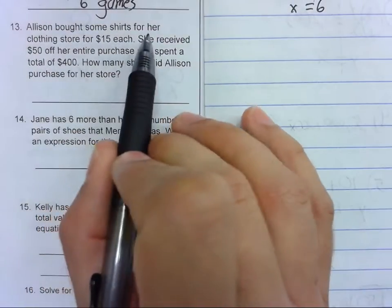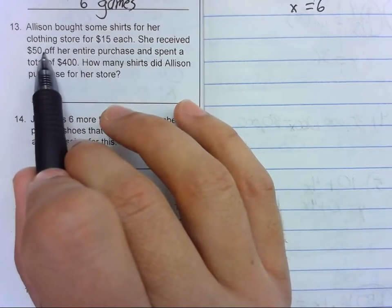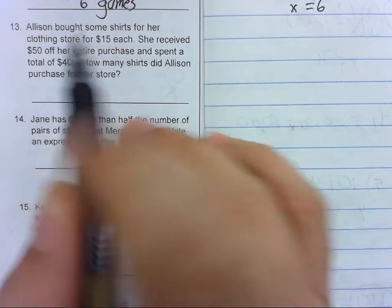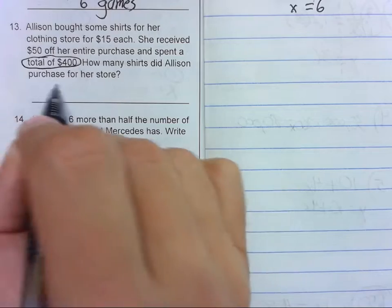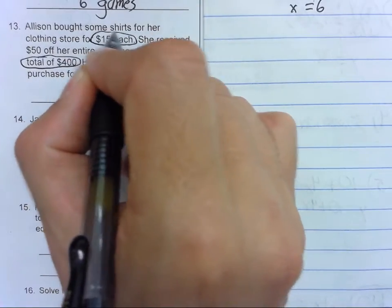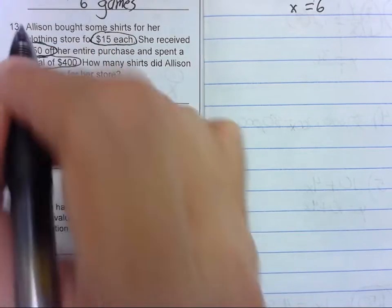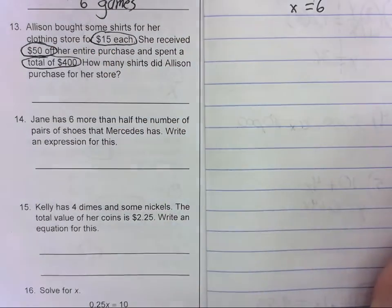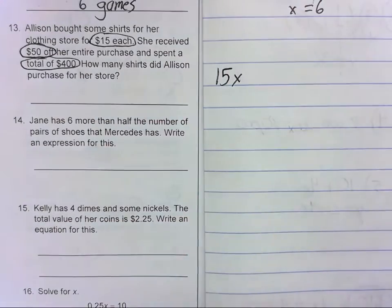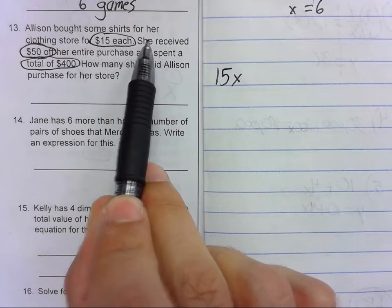Allison bought some shirts for her clothing store for $15 each. She received $50 off her entire purchase and spent a total of $400. How many shirts did she purchase? So she bought them for 15 each. She was buying some shirts. Each shirt is $15. We don't know how many.